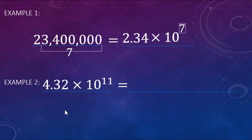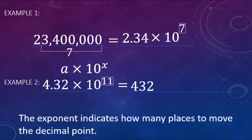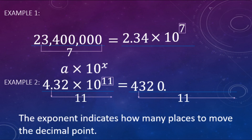Another example: 4.32 times 10 to the 11th power — already in scientific notation, and we want to write it as a regular standard number. We start with 4, 3, 2, then look at the exponent. That 11 tells us we're moving the decimal 11 places to the right. The decimal place starts right after the four and moves 11 places to the right. When we have a whole number like this, we normally don't write the decimal point — that's optional.